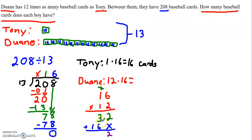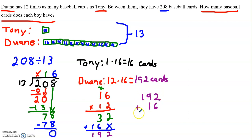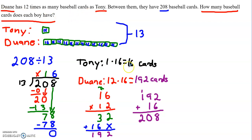Then I just add them: 2 plus 0 is 2, 3 plus 6 is 9, 0 plus 1 is 1. So Dwayne has 192 cards. The problem said they have 208 cards total, so I re-add these two numbers to check: 2 plus 6 is 8, 9 plus 1 is 10, bring down the 0, carry the 1, 1 plus 1 is 2. It does equal 208, so Tony has 16 cards and Dwayne has 192 cards.